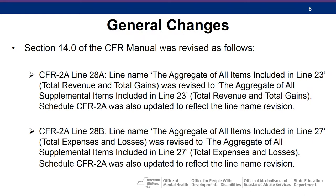Section 14 of the CFR Manual was revised as follows: CFR 2A Line 28A was revised to the aggregate of all supplemental items included in Line 23. CFR 2A Line 28B was revised to the aggregate of all supplemental items included in Line 27, Total Expenses and Losses.